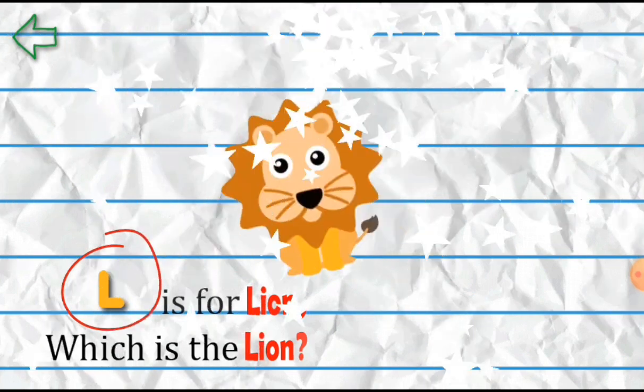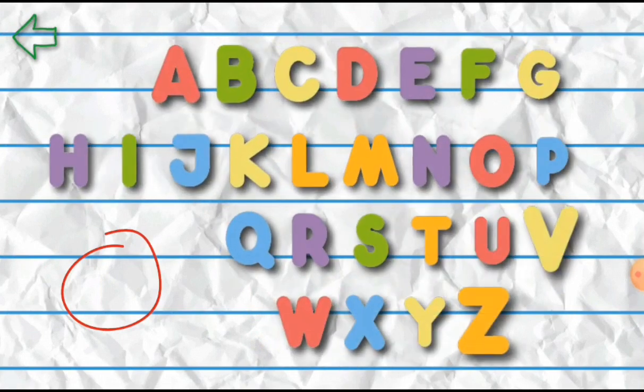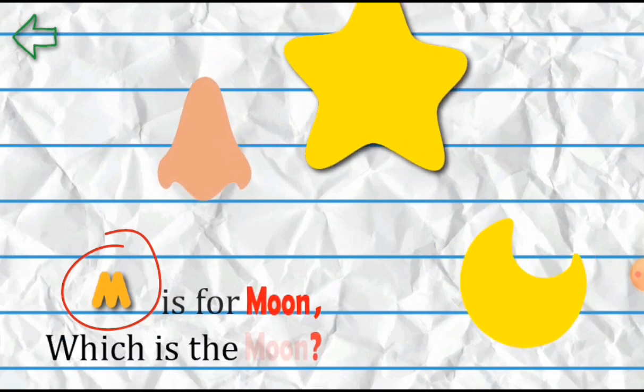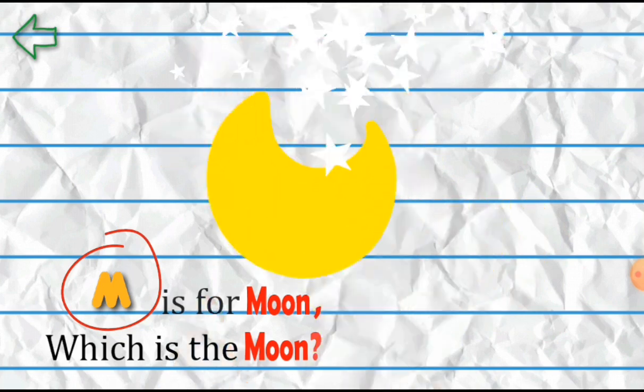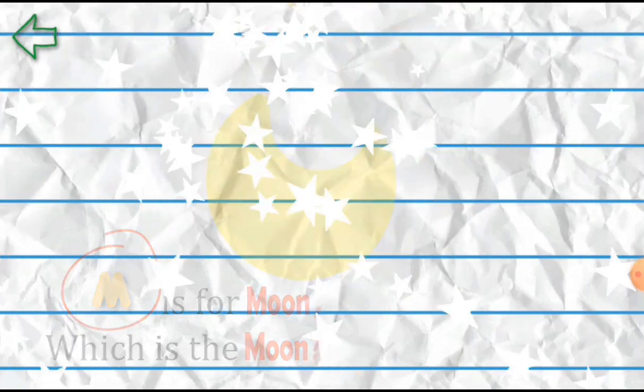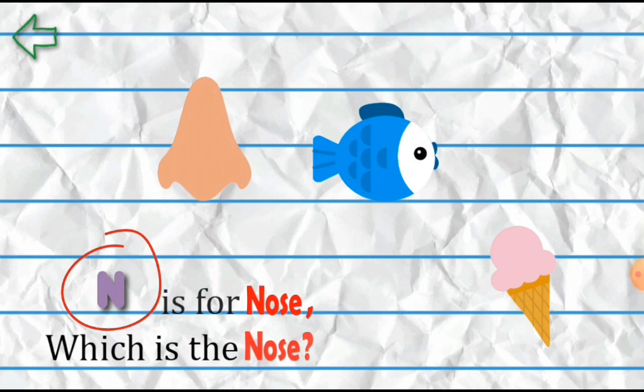M is for Moon. Which is that? Moon. N is for Nose. Which is that? Nose.